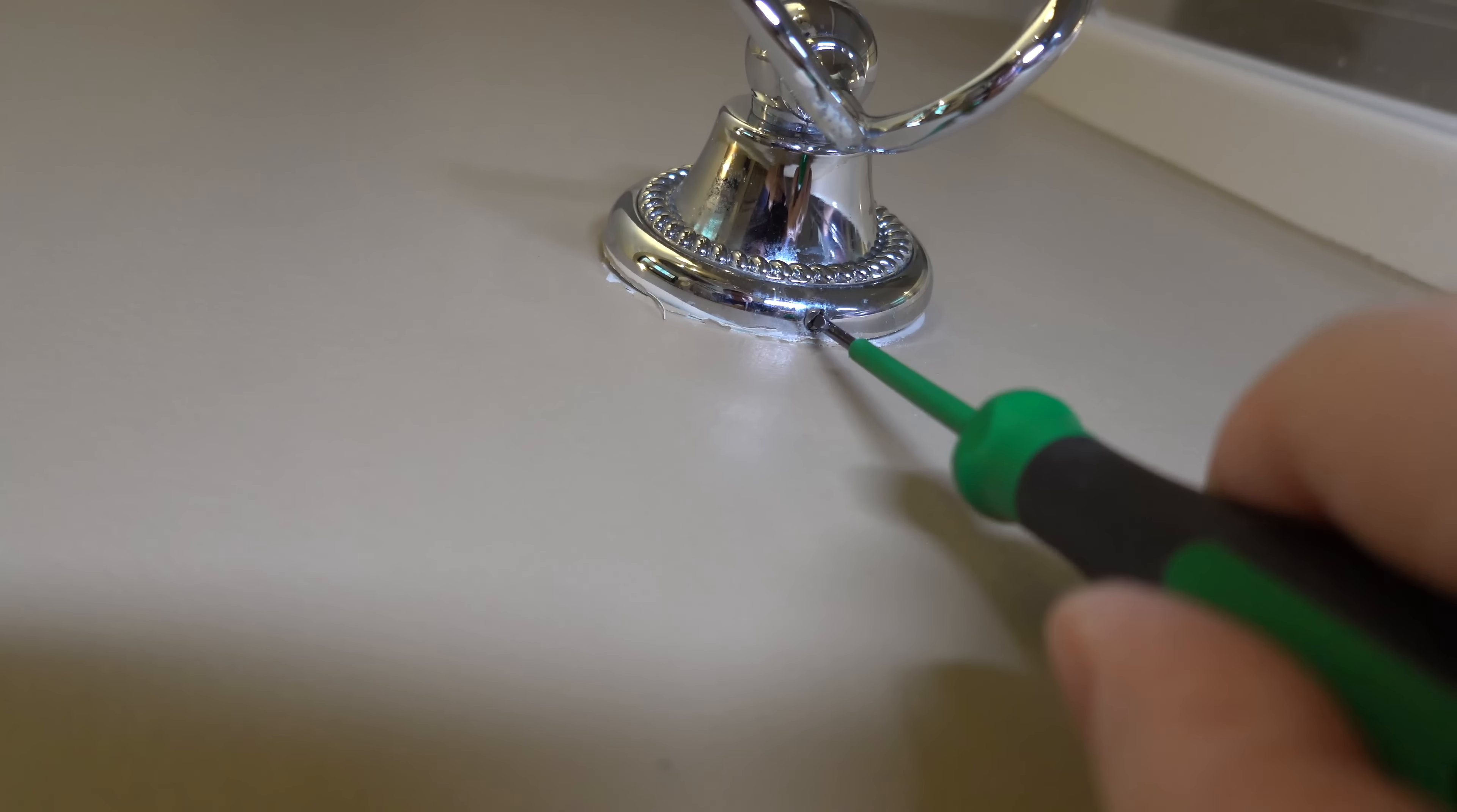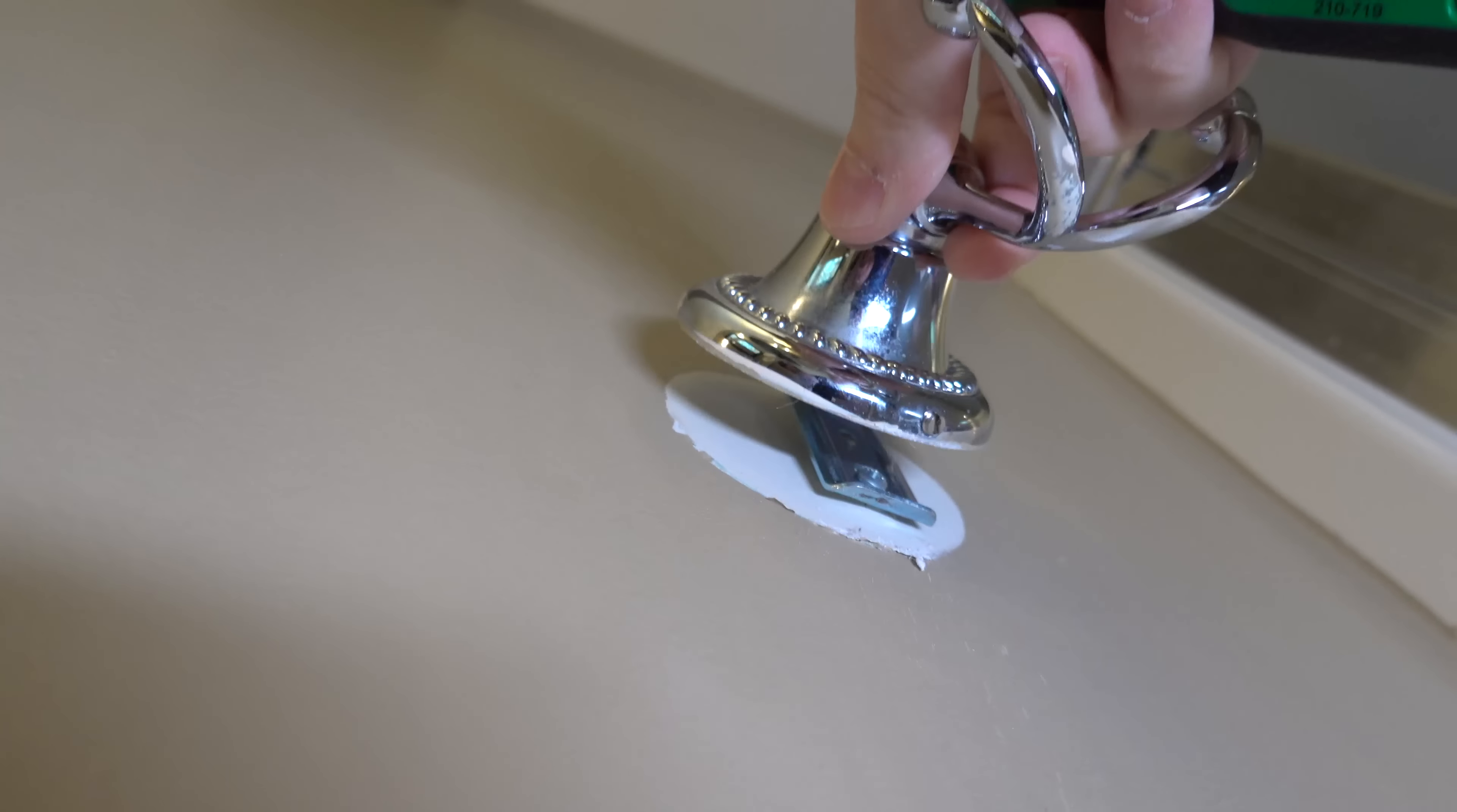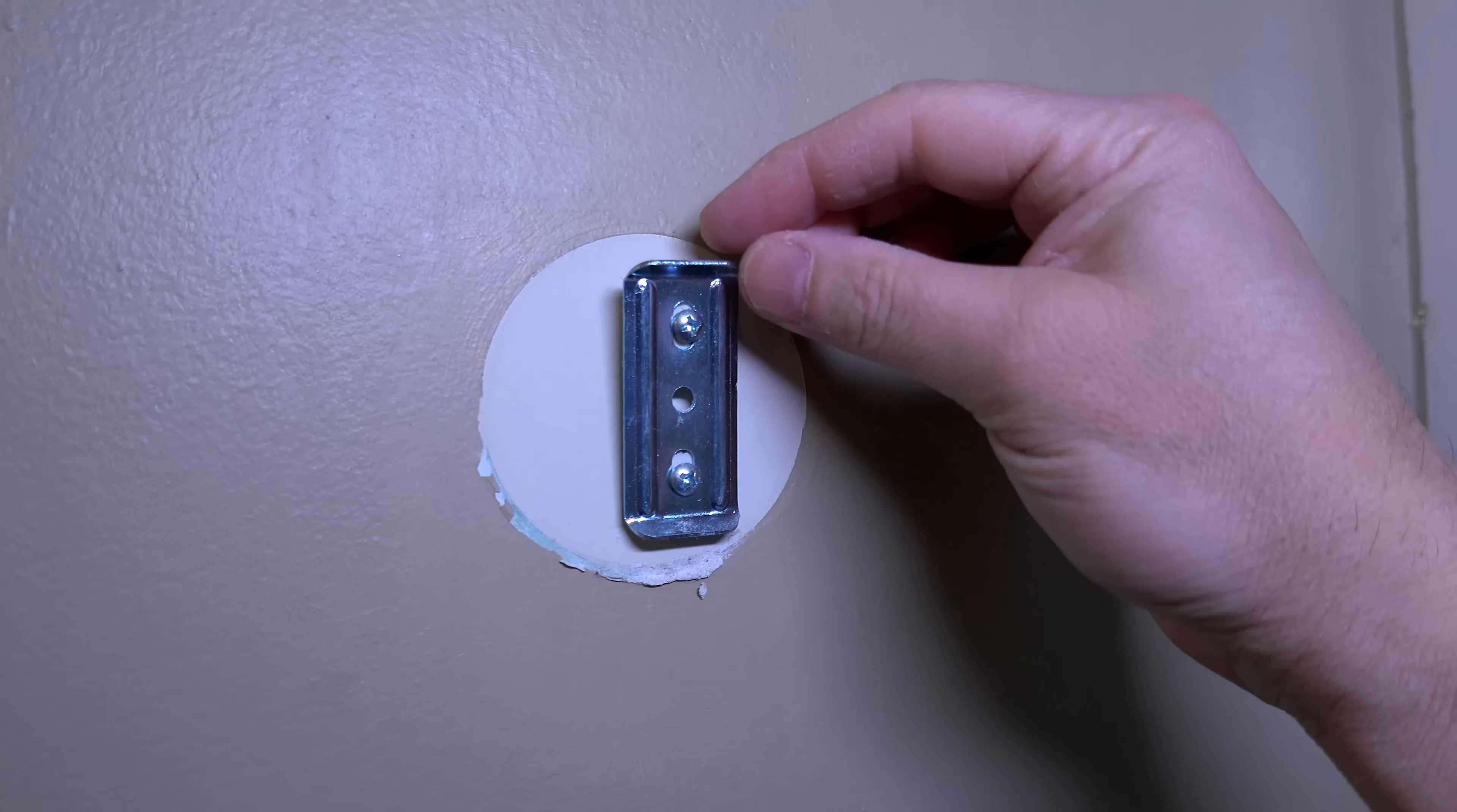You're going to start by removing the hook itself and that's done by taking this small screw off on the bottom. And here's the support bracket that's causing us all the trouble. You can see the top screw is completely loose and the bottom one isn't really too tight either.